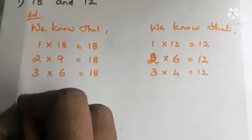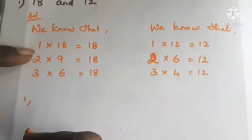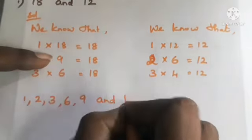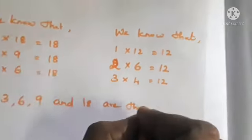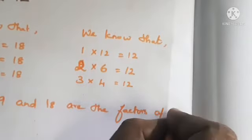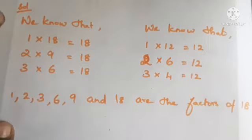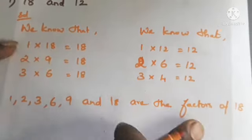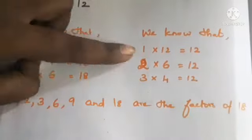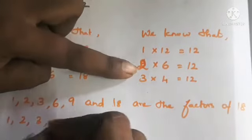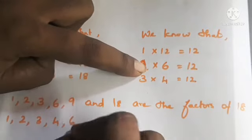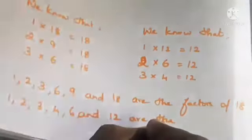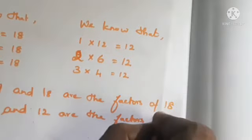Step 3: write down the factors of each number. Factors of 18 are: 1, 2, 3, 6, 9, and 18. Factors of 12 are: 1, 2, 3, 4, 6, and 12.